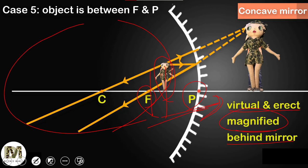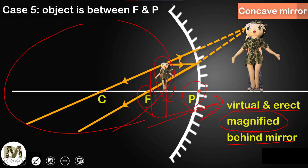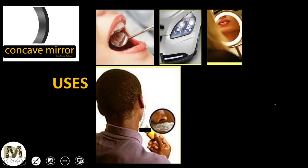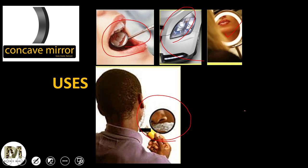Now let's look at the uses of the concave mirror. Since placing an object very close to the pole (between focus and pole) gives an erect and magnified image, concave mirrors are used for magnification purposes. For example, dentists use concave mirrors to magnify small areas of decay. Shaving mirrors and makeup mirrors also require magnification. Headlights also use concave mirrors. The object is kept very close — between focus and pole — to get a magnified image.